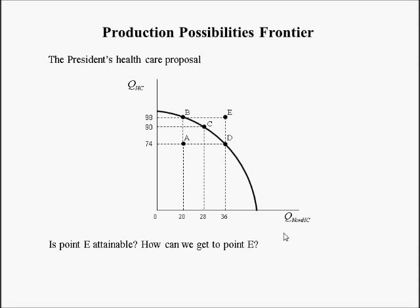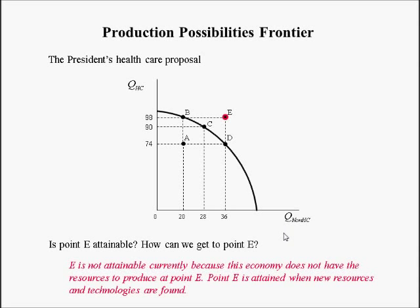Is point E attainable? Point E is not currently attainable because this economy does not have the resources to produce there. Point E becomes attainable when new resources and technologies are found. That's why countries used to go to war and expand their boundaries — for instance, the UK was a small island with limited resources that colonized much of the world so the sun never set on it.